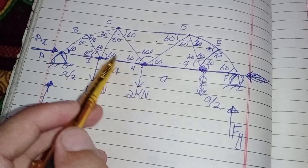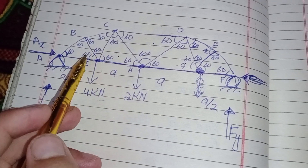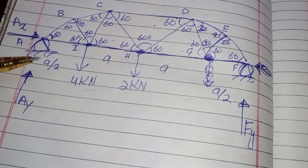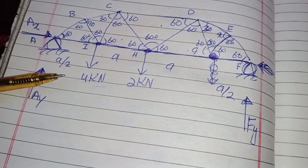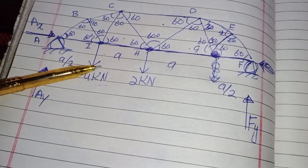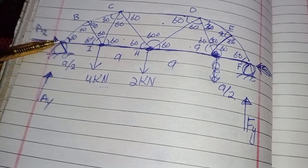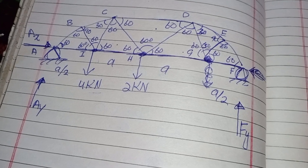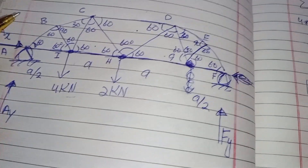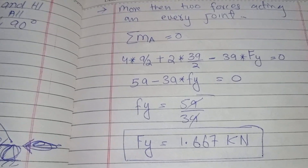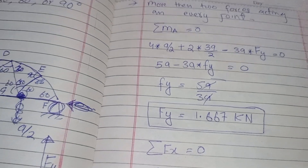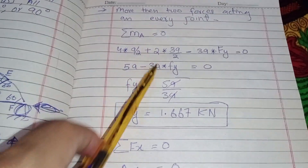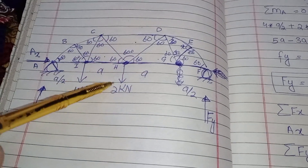We will find forces in these three members. However, since there are more than two unknown forces acting on every joint, we first isolate the truss, show the reaction forces, and find them using the three equations of equilibrium. The first equation is: moment at any point equals zero.